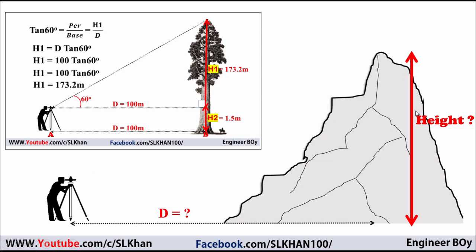What if you cannot measure the horizontal distance between an object whose height is to be determined — in this case a mountain — and the instrument? So what should we do in this case? Previously the object was accessible, but here, as you can see, this mountain is never accessible to measure the horizontal distance between the instrument and the vertical line. In this video we'll solve a problem about this approach.